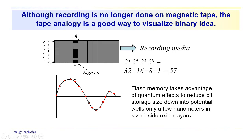So, it is worth, if you've studied quantum mechanics, flash memory, for example, takes advantage of quantum effects to reduce bit storage size down to potential wells, only a few nanometers in size, inside oxide layers. Which has made the amount of data you can store in a really small area, really small part of the storage medium, immensely large. Our ability to store data in smaller and smaller physical media has increased dramatically as we begin to get down into this quantum world.